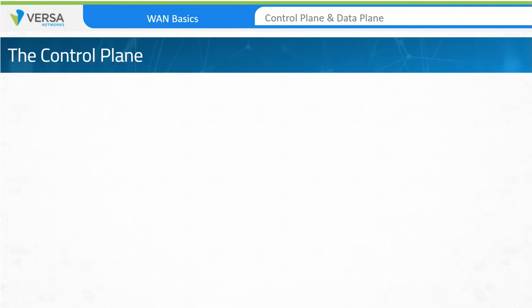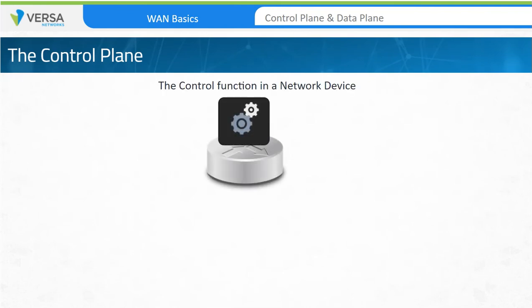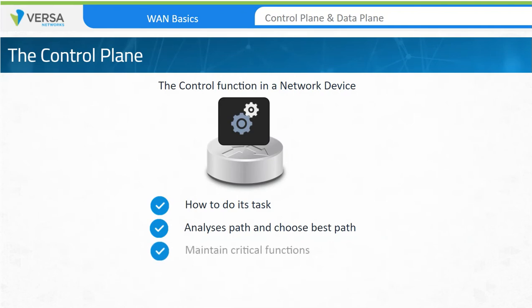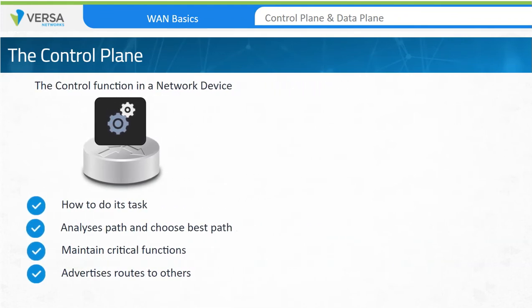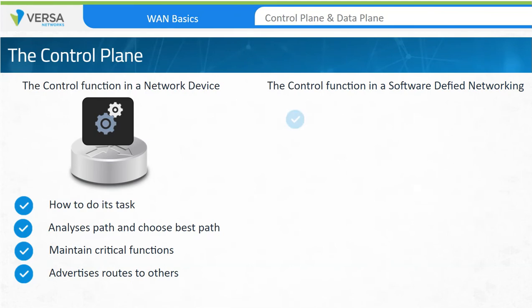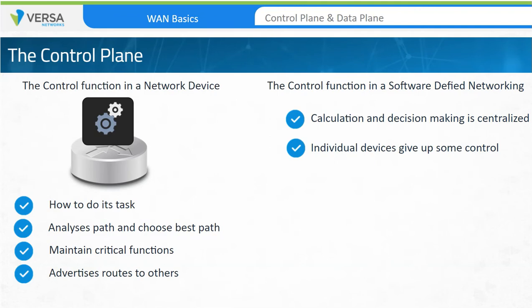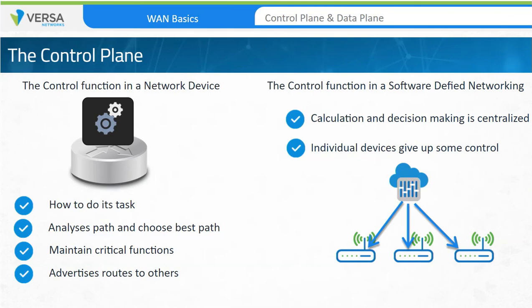In a network architecture, the control plane is a system that provides instructions on how devices should perform their tasks. It analyzes paths, chooses the best path, maintains critical functions, and distributes routing information throughout the domain. With software-defined networking, calculations and decision-making are centralized so that individual devices give up some or all of their control over routing decisions. In a software-defined WAN environment, a central node or set of nodes — also called a control plane manager — is responsible for sharing network topology details with devices to enable traffic flow. Every networking node communicates with this central control node, and this system of communication and information sharing is called the control plane.